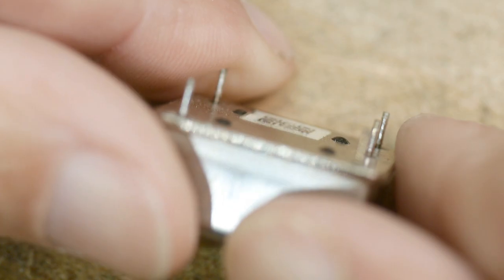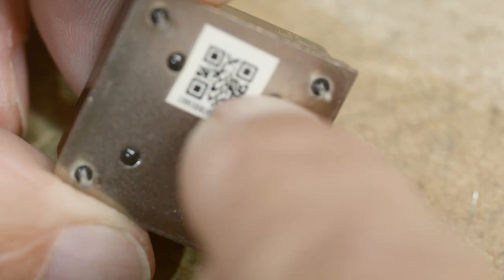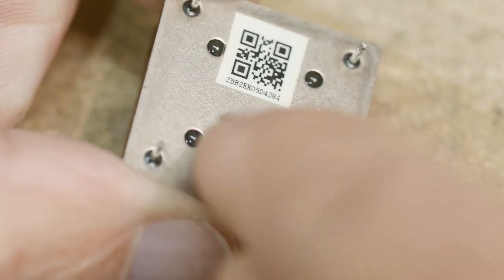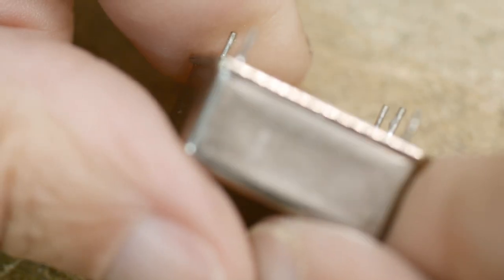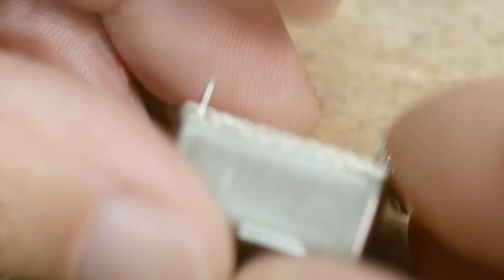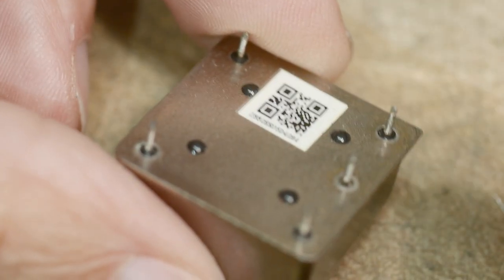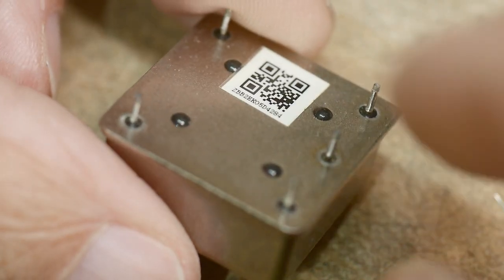So this is what they look like. They have little bumpers—these little things that look almost like glass or something—that space them off the PC board a little bit. So this thing is not in thermal contact with the PC board. It's off a little bit, and it's only making contact with the PC board with the pins.